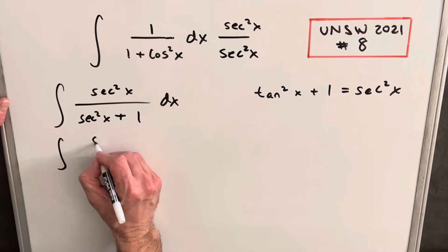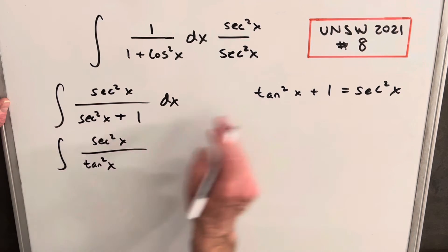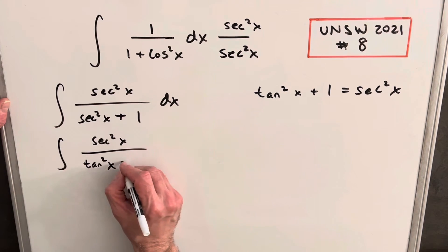So let's see how this is going to look. We'll keep our secant squared x in the numerator. And then we're going to have tan squared x plus one, but plus another one. So we're going to have a plus two here.